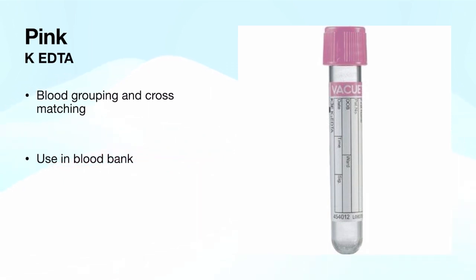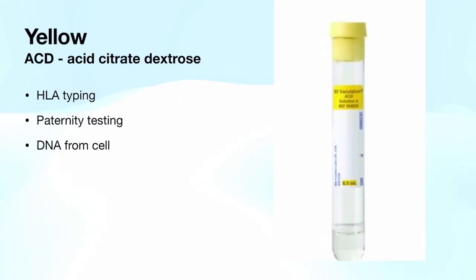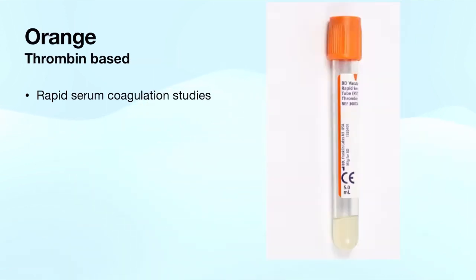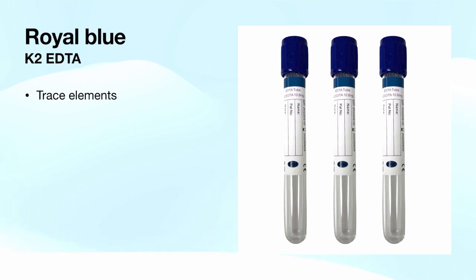The pink tube is used for blood grouping and cross matching, and is most commonly used in the blood bank. The yellow tube is an acid citrate dextrose tube used for HLA typing, paternity testing, and DNA testing. The orange tube is different from the gold tube — it is a thrombin-based tube that also contains gel and is used for rapid serum coagulation studies.